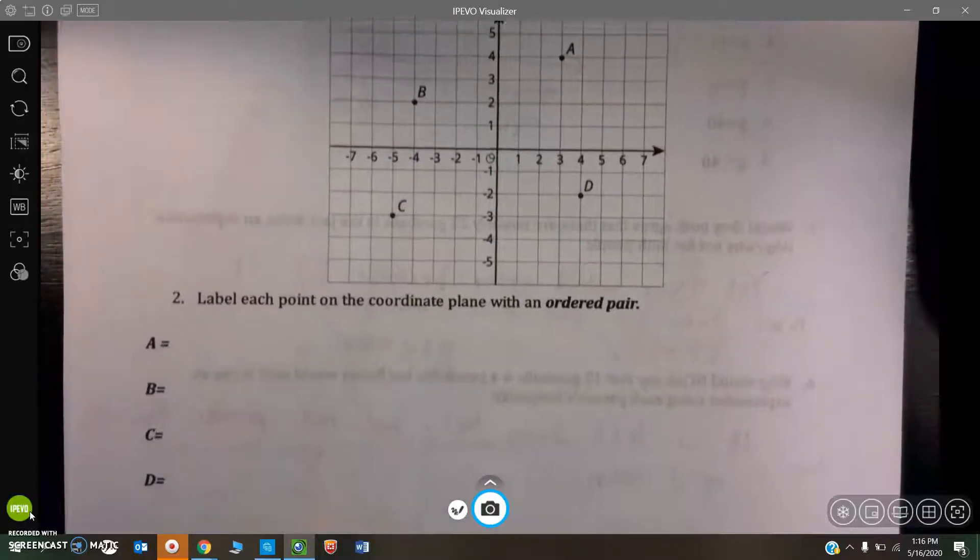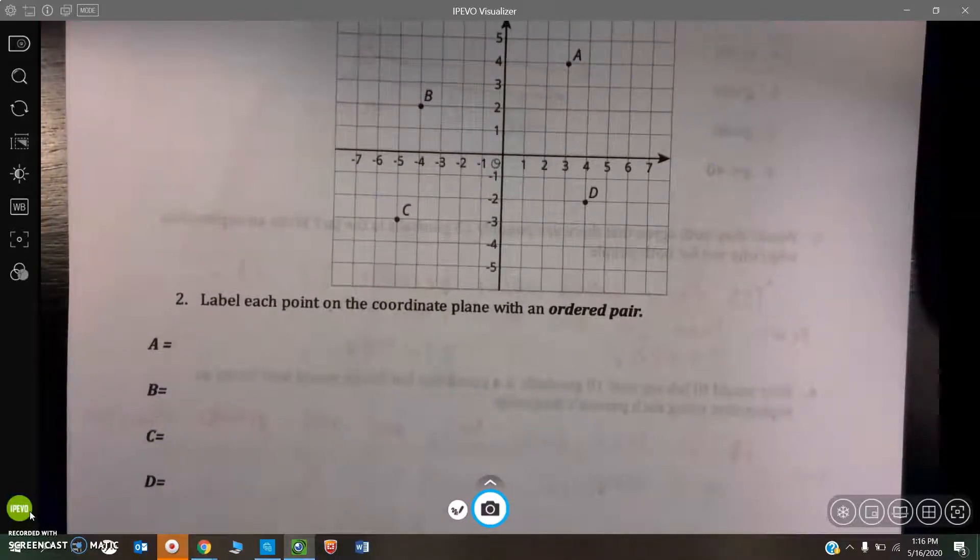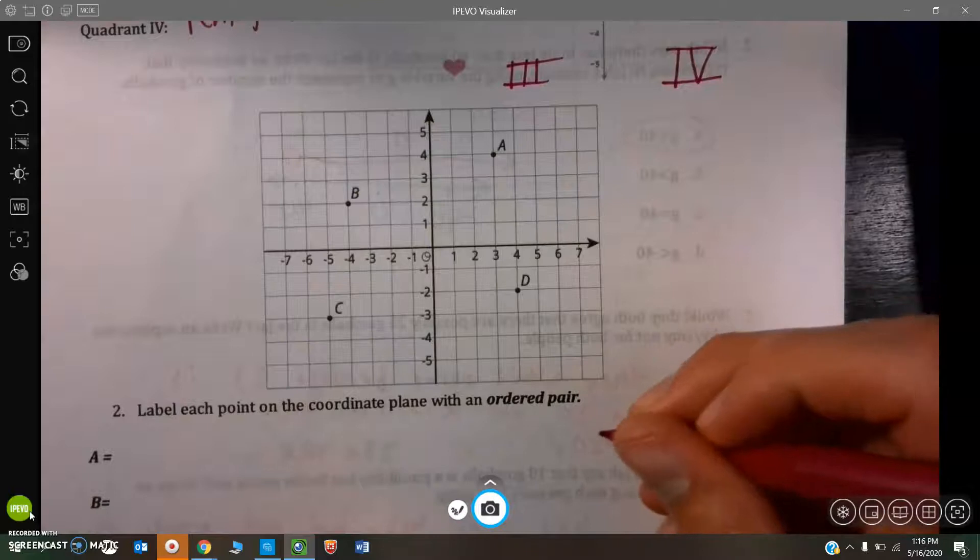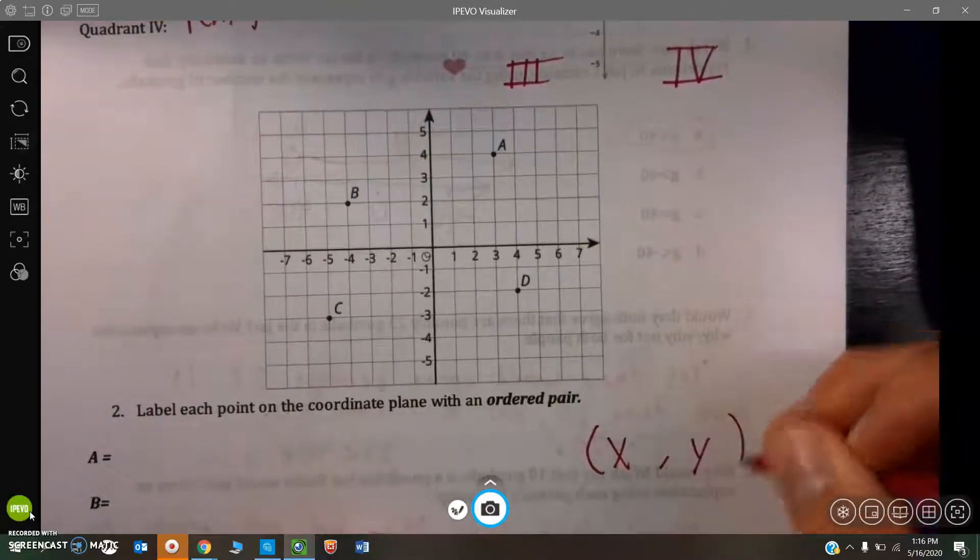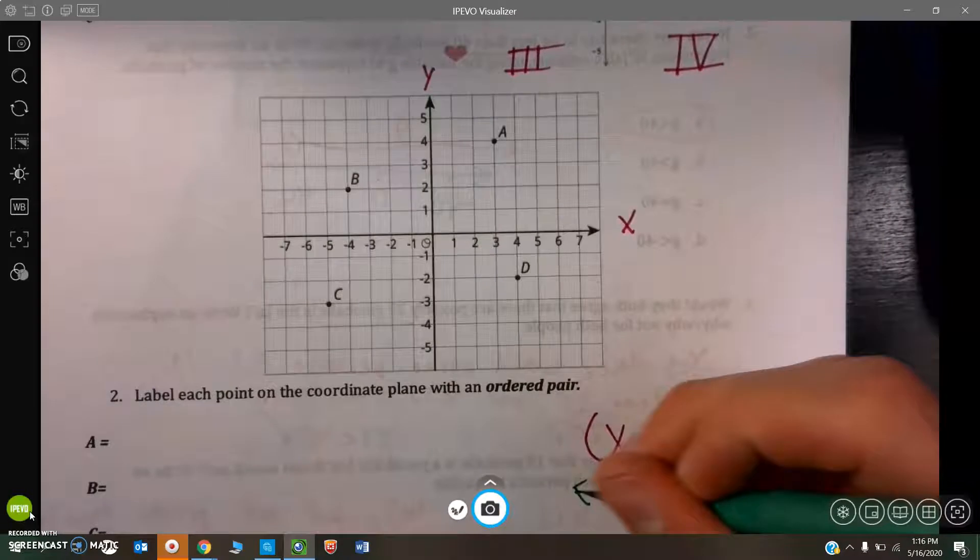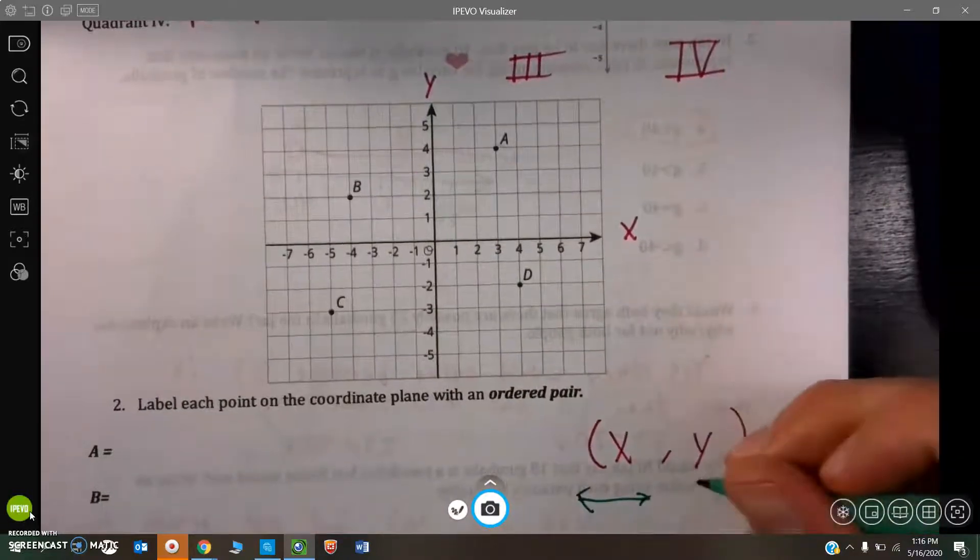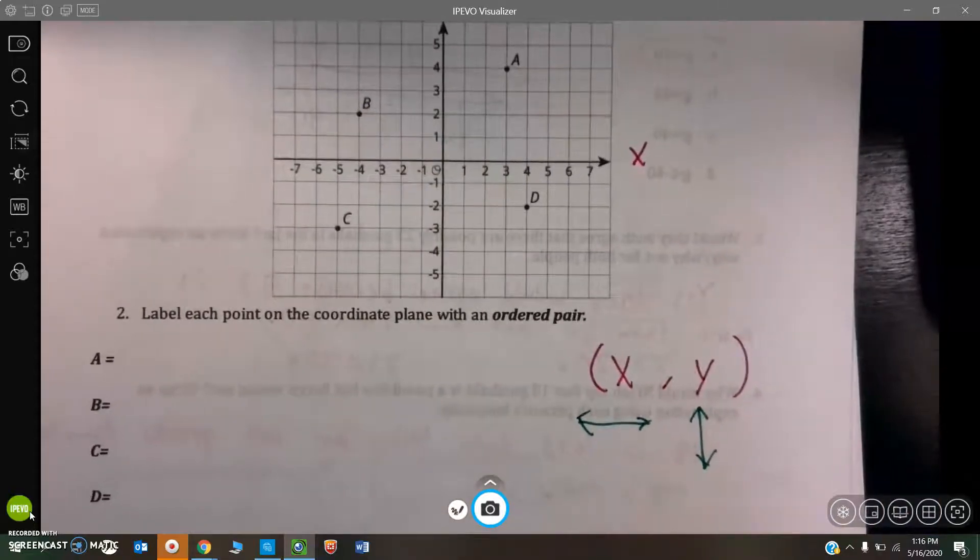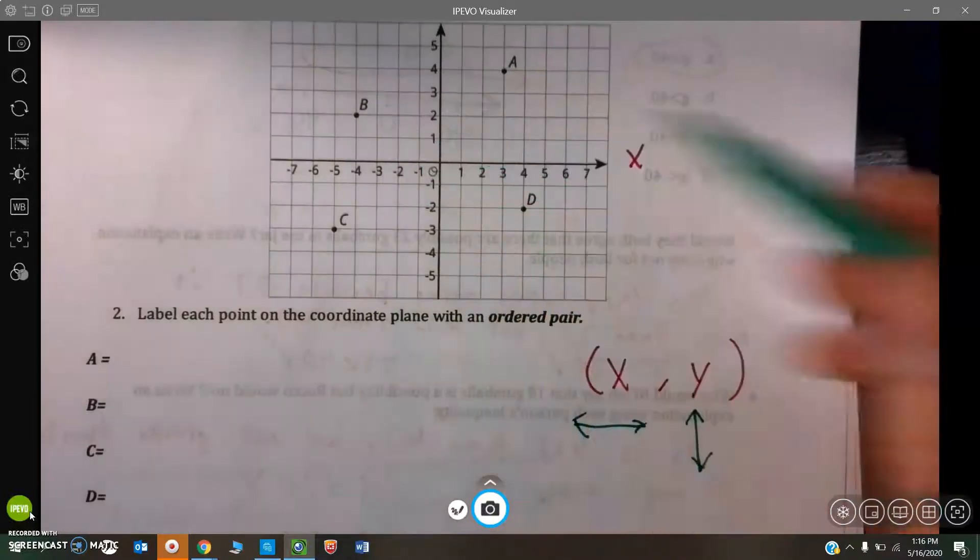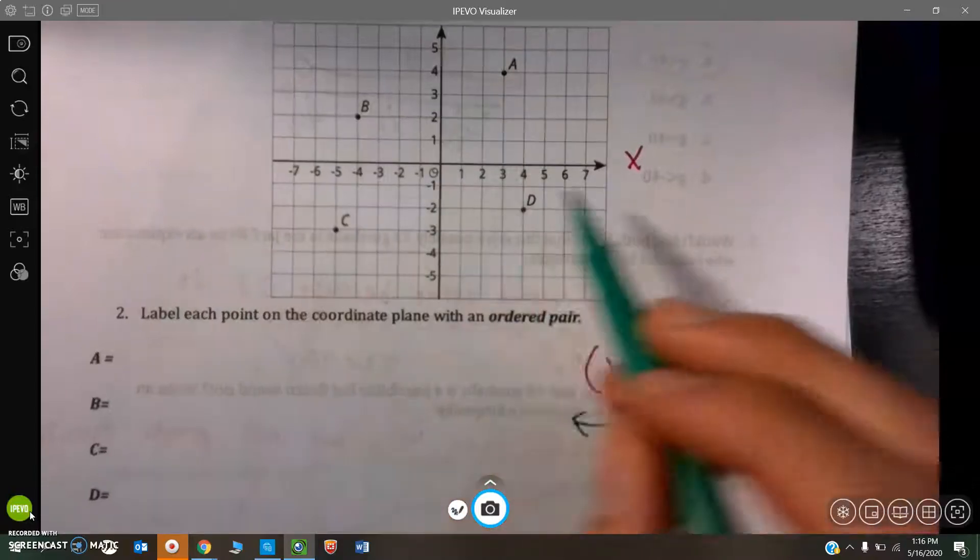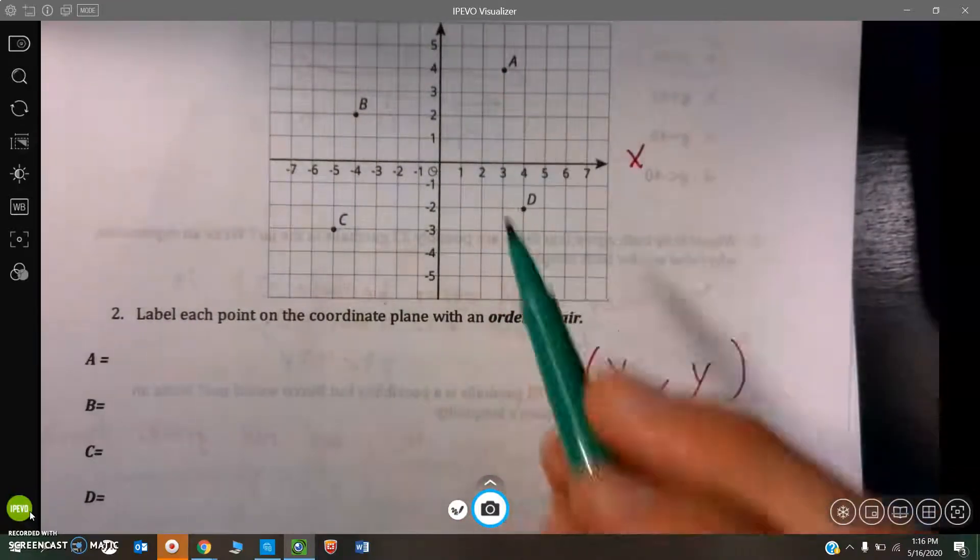Now we need to label each point on the coordinate plane with an ordered pair. First one up is A. Really important to note, every ordered pair is written as an X, Y pair. You also need to know that X is left and right and Y is up and down. Kind of think of it like a book. If you were reading a book, you always start at the top of the page, and you go from left to right, and then you go down to the next line. Same thing here. You always start going left and right, and then you see how high or low it is.